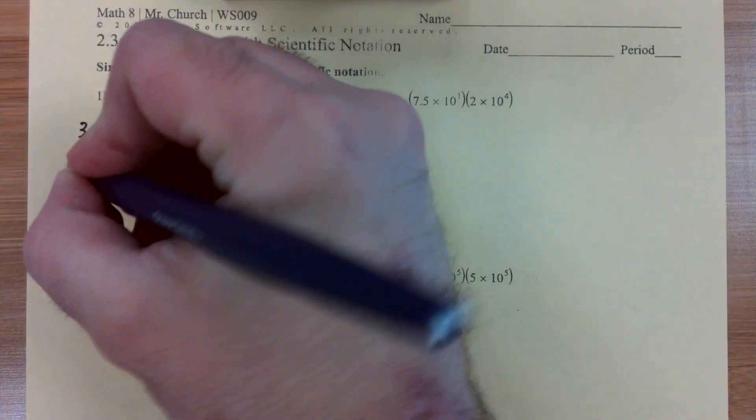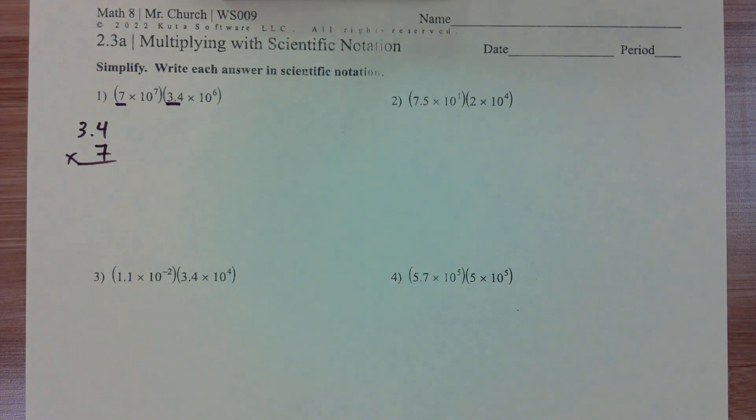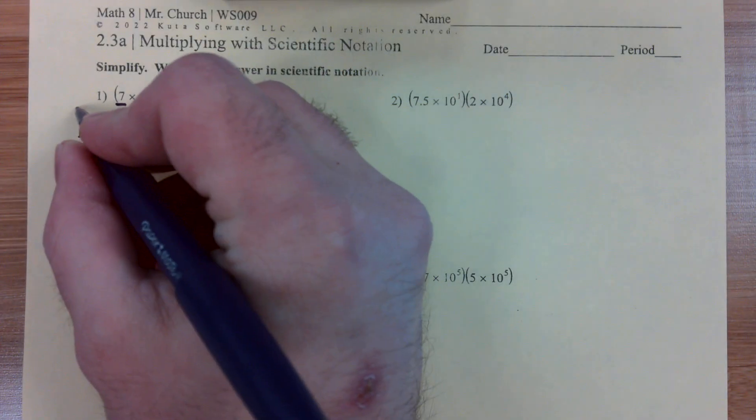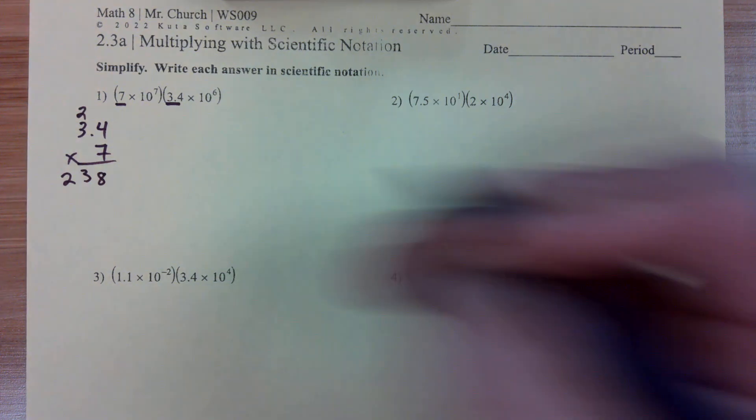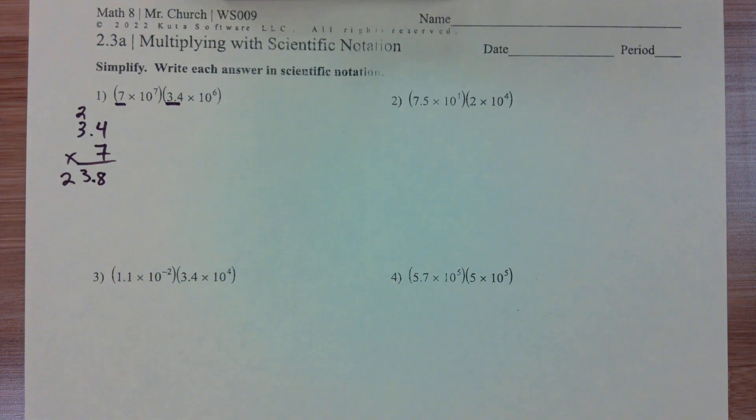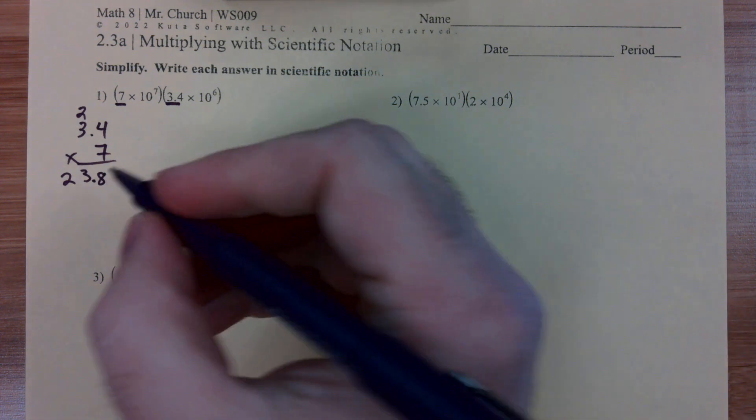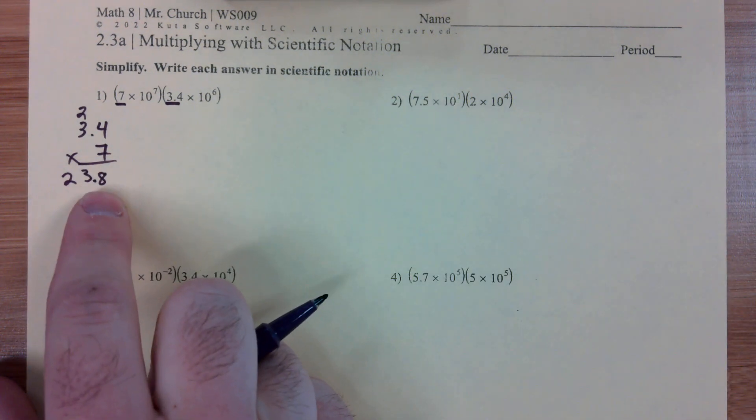So because we don't have a calculator at our disposal, the first thing we have to do is a little hand multiplication. 7 times 3.4, and then one decimal point, right? So 23.8 is our new leading number.